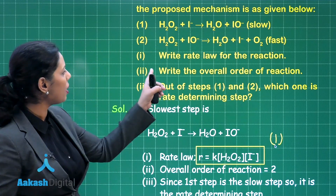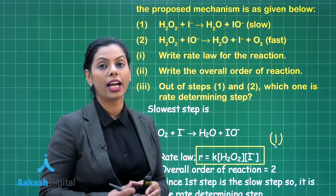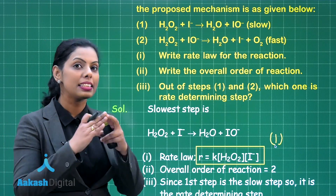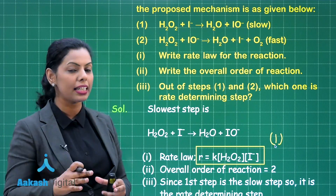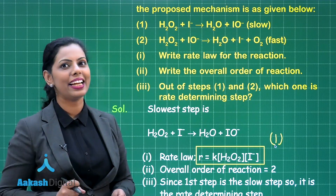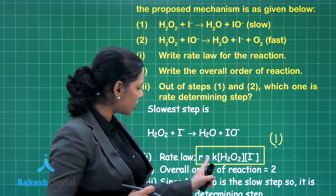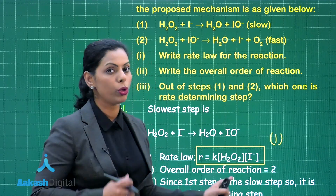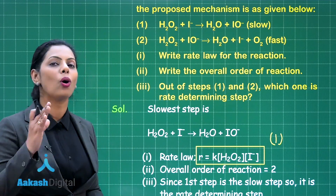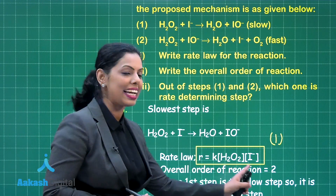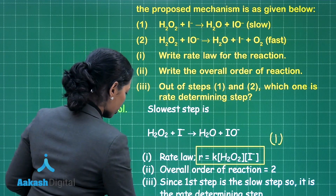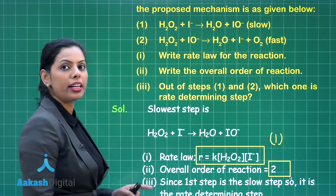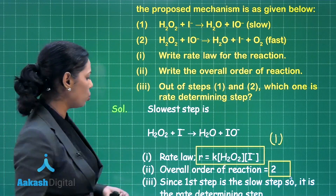After that there was a second part: write the overall order of the reaction. The order of the reaction is the sum of the powers of the reactants present in the rate expression. In the rate expression you can clearly see one reactant and a second one, so the overall order of the reaction is second order.